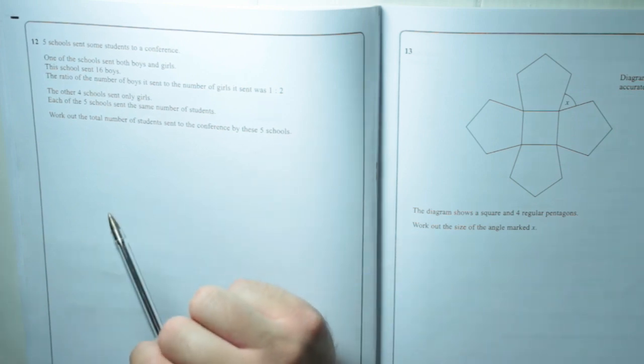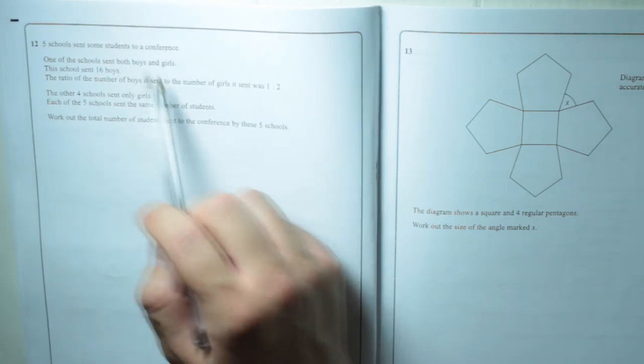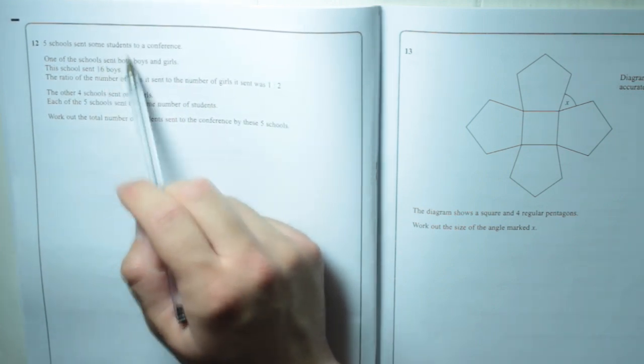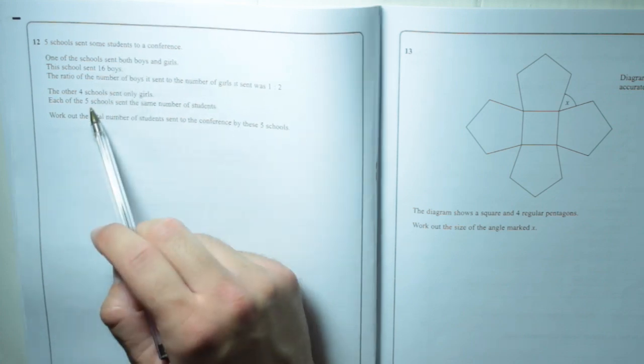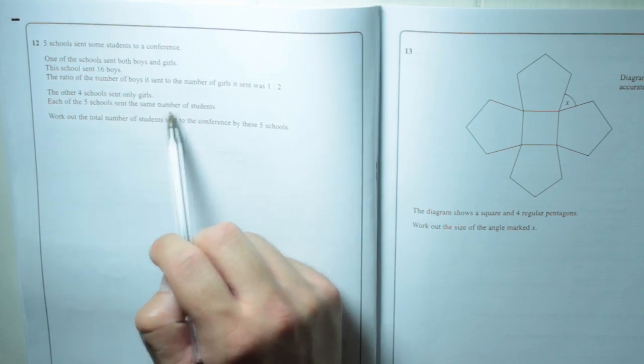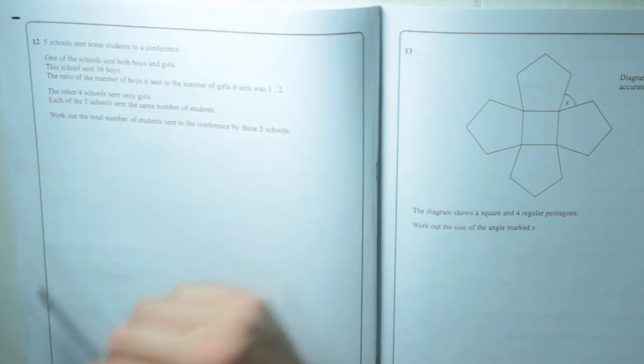So let's have a look at the first school, because that's the only one where they give us some proper information. If you can work out how many the first school sent, then all you've got to do is take that number and multiply it by five, because there were five schools in total and they sent the same number of students. We've got to work out the total number of students—it doesn't matter if it's boys or girls.